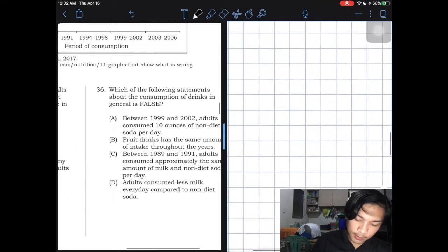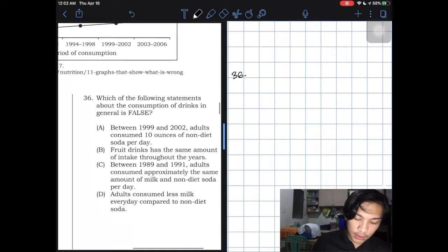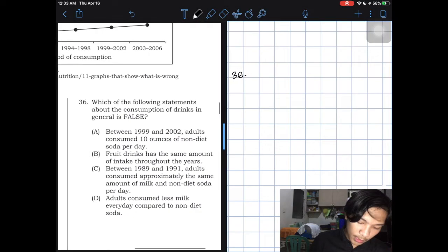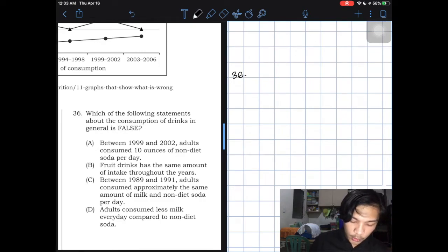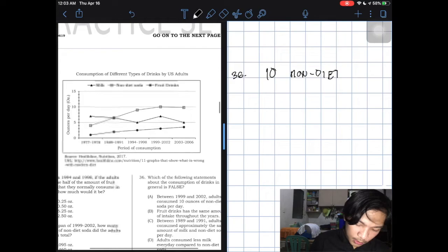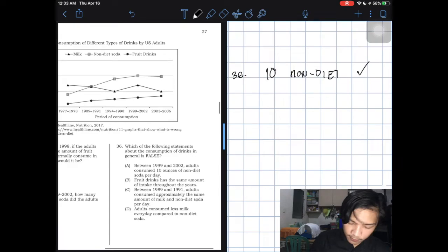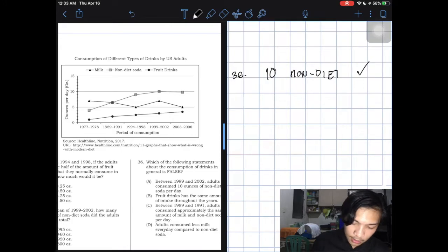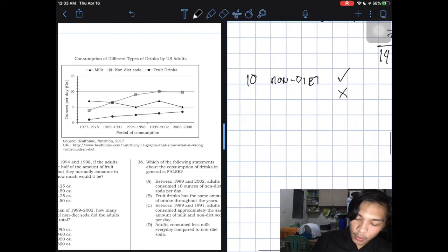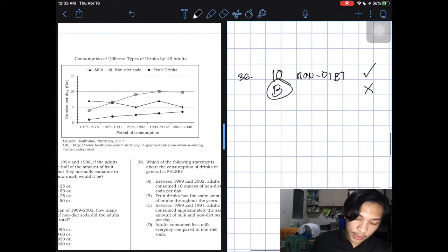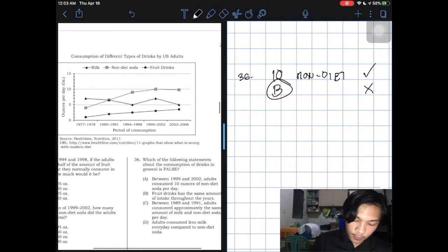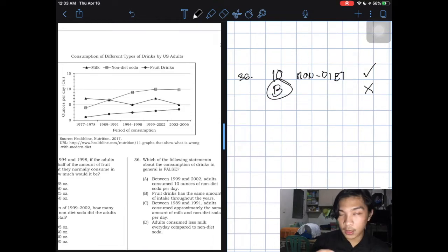Number 36. Which of the following statements about the consumption of drinks is generally false? Letter A. Between 1999 and 2002, adults consumed 10 ounces of non-diet per day. 1999, 10 ounces, non-diet. Yes. This is correct. Fruit drinks have the same amount of intake throughout the years. You can see immediately this is wrong. So B is the answer. Because there is an increasing rate of fruit drinks from 1977 to 2006.